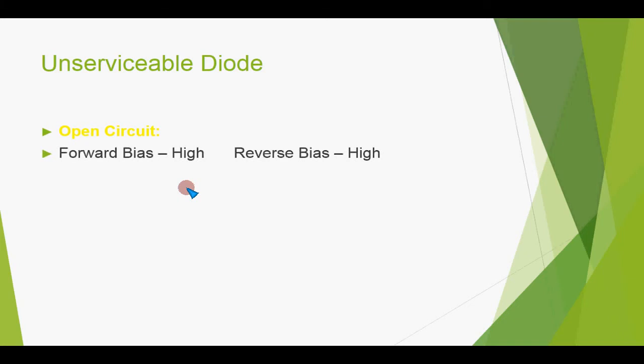If the diode is unserviceable due to an open circuit and we have connected it in forward bias — where normally the resistance is very low — the resistance presented by the diode will be very high. If connected in reverse bias, it will also show very high resistance.